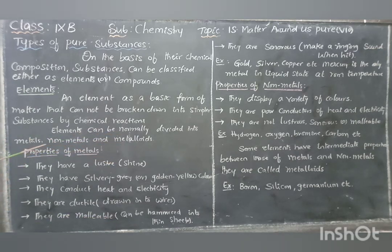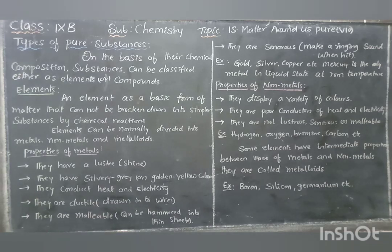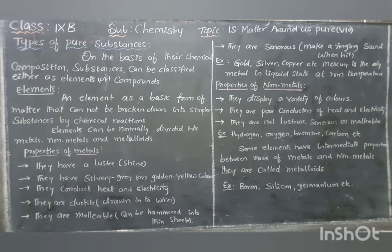Elements can be broadly divided into three categories: metals, nonmetals, and metalloids. We will understand the properties of metals, nonmetals, and metalloids with examples.